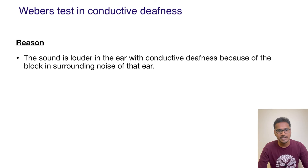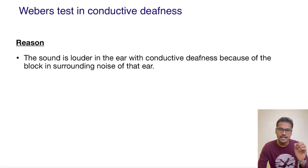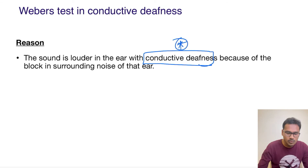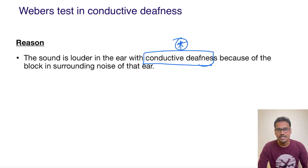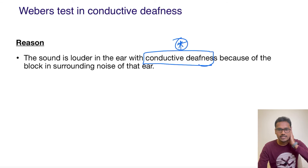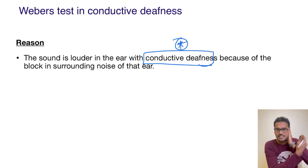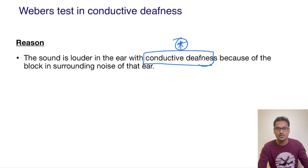The reason behind it is pretty simple. Whenever any ear is affected due to conductive hearing loss, what happens is it is like just blocking that ear. When you place the tuning fork, the sound is transmitted on both sides, but on the affected side there is no external influence or background noise affecting that ear.